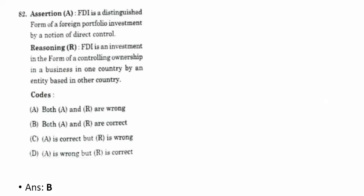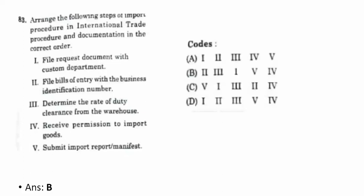Eighty-second question — assertion and reasoning: FDI is distinguished from foreign portfolio investment by the notion of direct control. The reason is FDI is an investment in the form of controlling ownership in a business in one country by an entity based in another country. The correct option is B — both A and R are correct. Eighty-third question: arrange steps of import procedure in proper sequence. The correct option is B — two, three, one, five, four: file bills of entry with business identification number, determine rate of duty, clearance from warehouse, file request documents with customs department, receive permission to import goods.